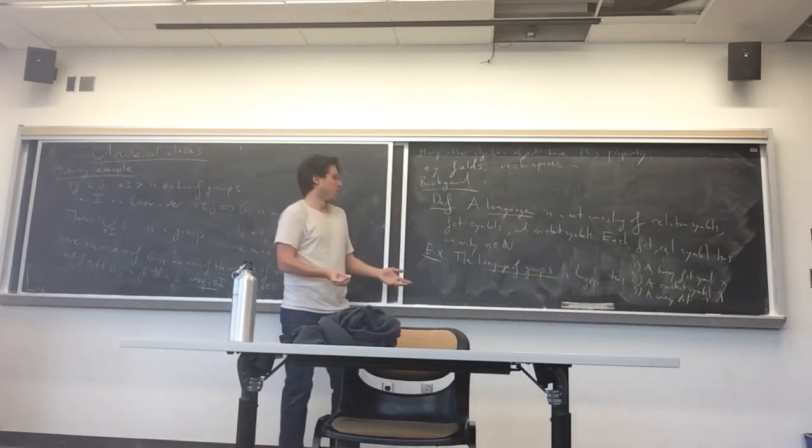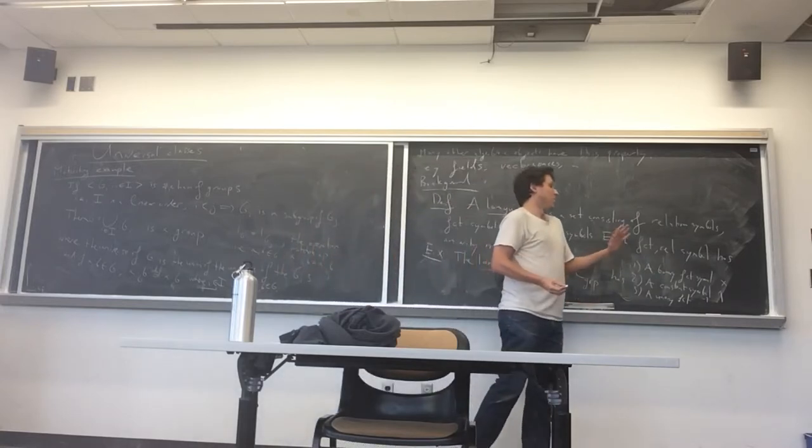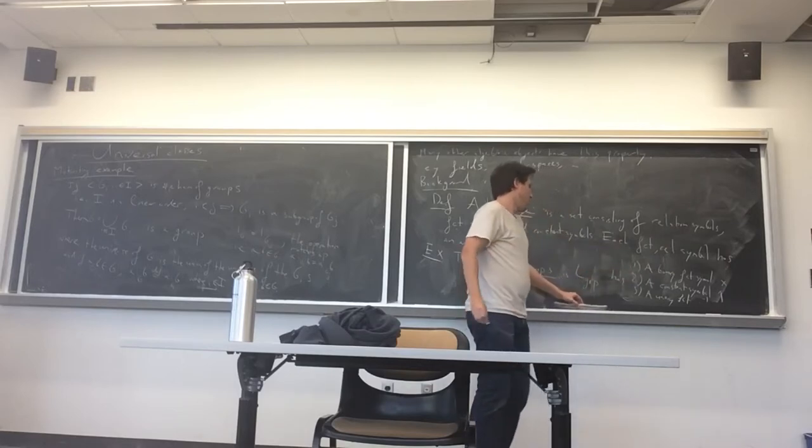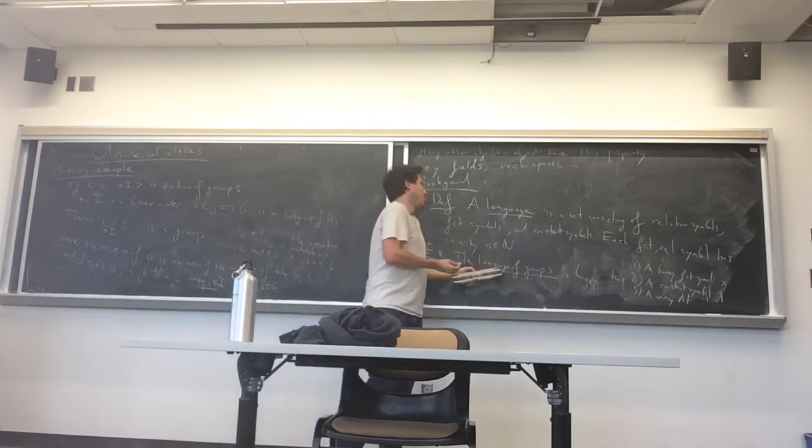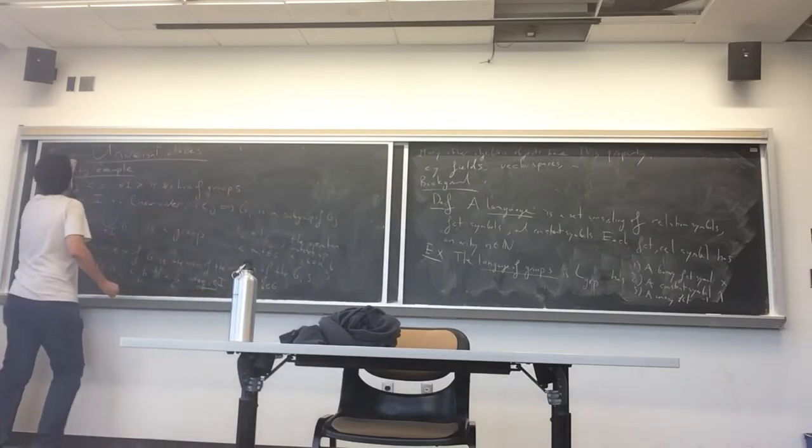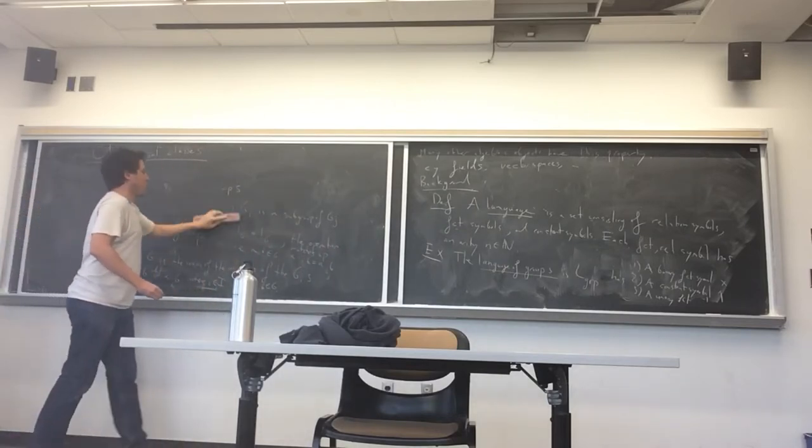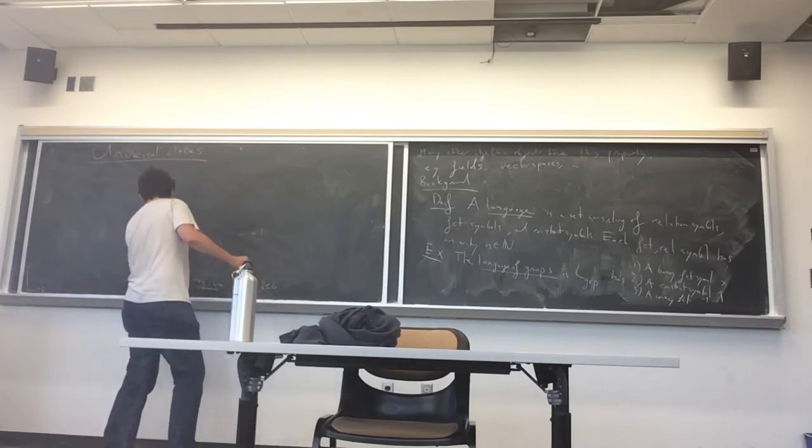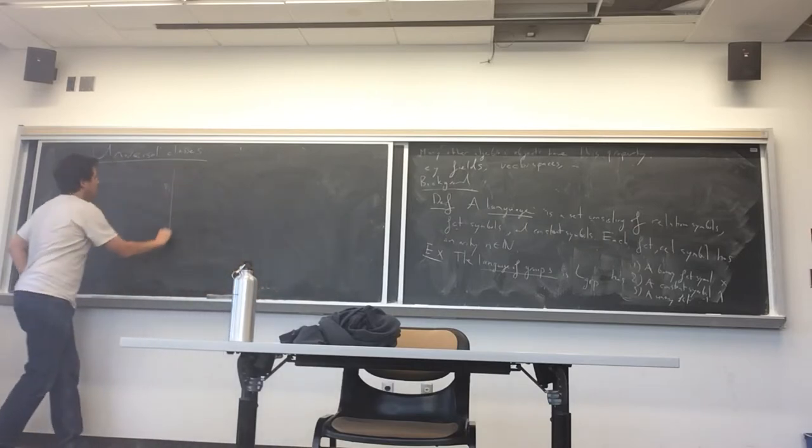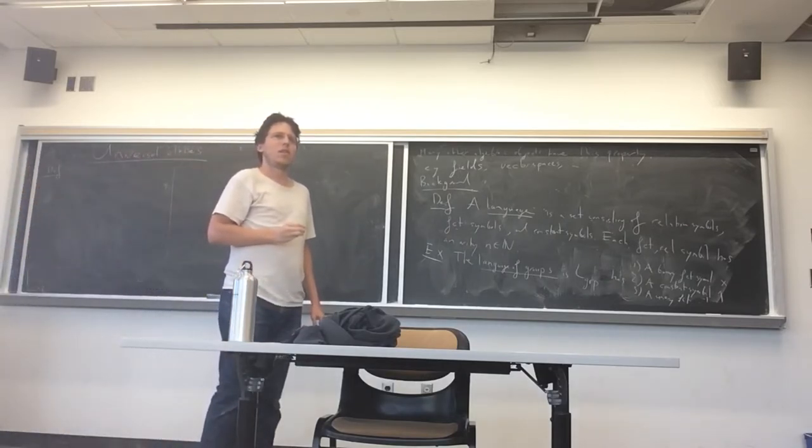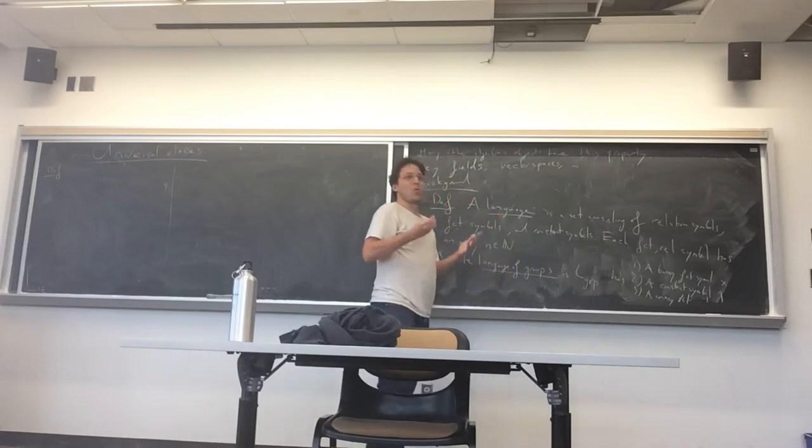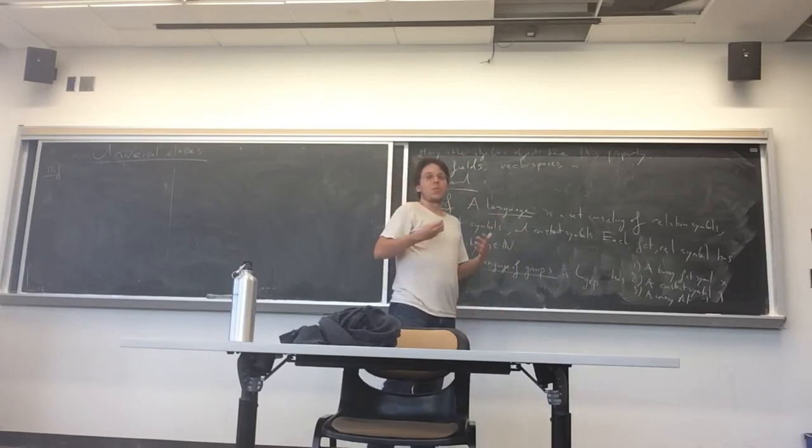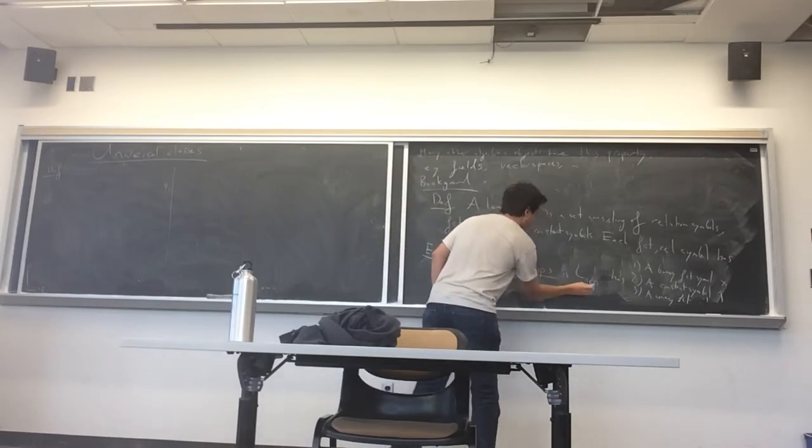So a language is just a bunch of symbols. It doesn't tell me anything about how the operation behaves, it just tells me what I have to work with when I want to talk about groups. Now what do I do with the language? I can define structures or models. So in that case the language of groups has no relation symbols. You could imagine that I'm putting an ordering on the groups. So if you consider ordered groups it would be a relation symbol, less than, a binary relation symbol. So let me give you another example.